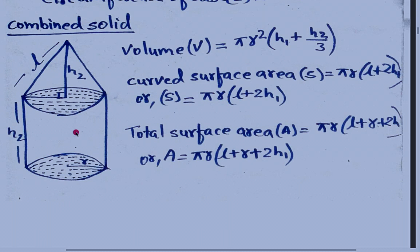So we will find the volume. Volume is equal to π R² × (H1 + H2) / 3. Using this formula, we will find the volume of this combined solid figure.